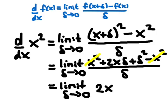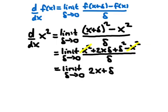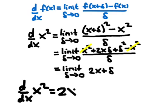What we obtain is the limit as delta goes to zero of 2x plus delta. The term 2x does not vary as delta changes, and the remaining delta vanishes in the limit, so the result we obtain is 2x. Our final result is that the derivative with respect to x of x squared is 2 times x. We now want to generalize this to x to the power of n, where n is a positive integer.